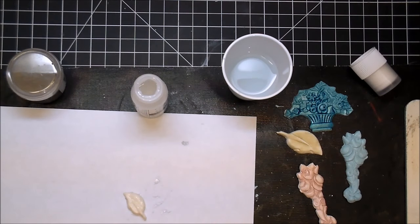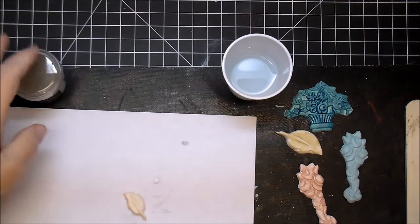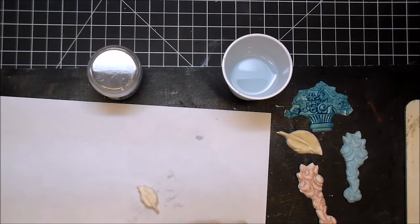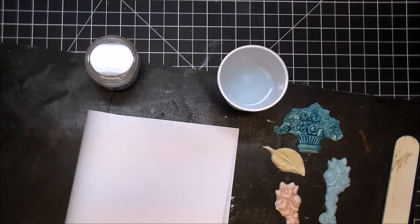And now I'm going to add some embossing powder. I'm using, again, by Ranger, Liquid Platinum. You could use whatever color that you'd want.